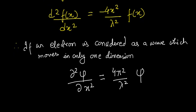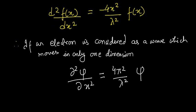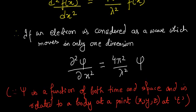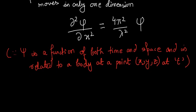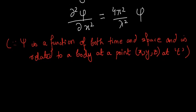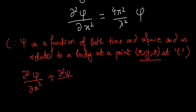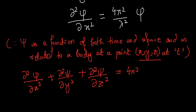Comparing the two equations, we can say f(x) is equal to ψ. The reason is that ψ is a function of both time and space and is related to a body at a point x, y, z at time t. An electron may move in three dimensions, so the equation becomes ∂²ψ/∂x² plus ∂²ψ/∂y² plus ∂²ψ/∂z² equals 4π² by lambda squared times ψ.